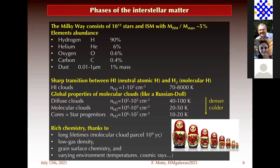There is a sharp transition between H1 (neutral atomic hydrogen) and H2 (molecular hydrogen), occurring at very low density and high temperature. As you enter the clouds, it gets denser and denser, colder and colder. There are different structures: diffuse clouds, molecular clouds, and dense cores — the star-forming sites. As density increases a lot, temperature decreases. There is also very rich chemistry in these clouds because of their long lifetimes, low density gas, grain surface chemistry, and varying environments of temperature, cosmic rays, and so on. The clouds are really like Russian dolls.